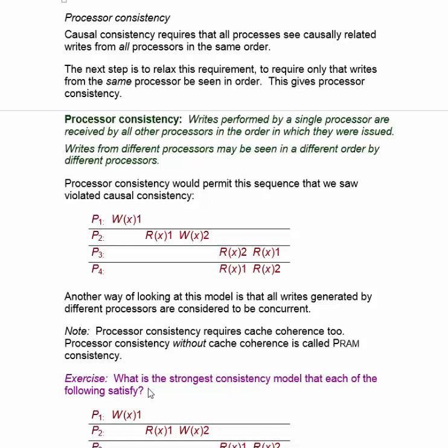What that means is that writes from processor 1 have to be seen in order throughout the system, but writes from processor 2 could be seen before or after a write from processor 1, depending upon where that is in the system. So the definition of processor consistency is: writes performed by a single processor are received by all other processors in the order in which they were issued, but writes from different processors may be seen in a different order.